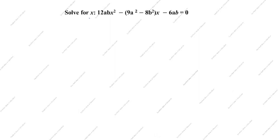Hi friends, welcome to my channel Excellent Ideas in Education. Today we are going to solve this quadratic equation problem. Solve for x: 12abx² minus open bracket 9a² minus 8b² close bracket x minus 6ab equal to 0. Now we will see how to solve this problem.